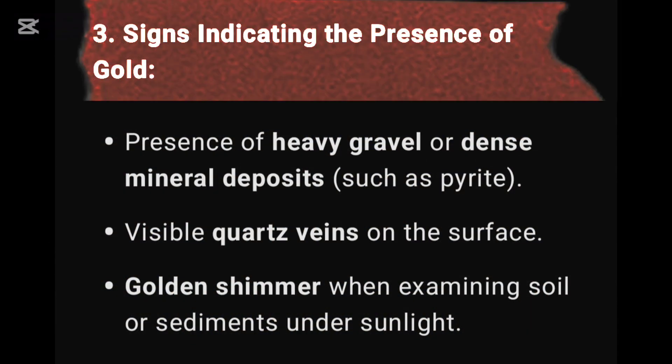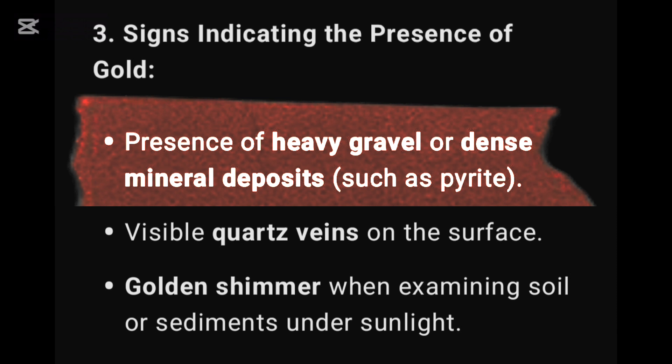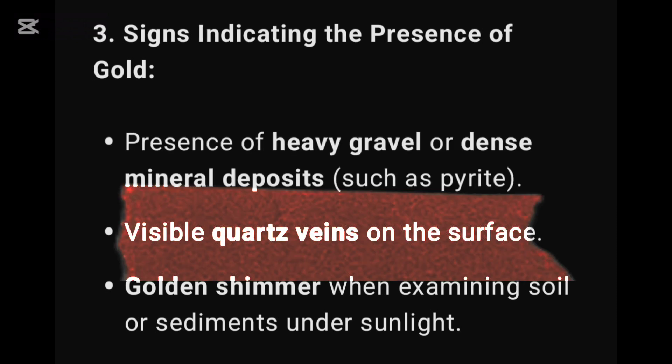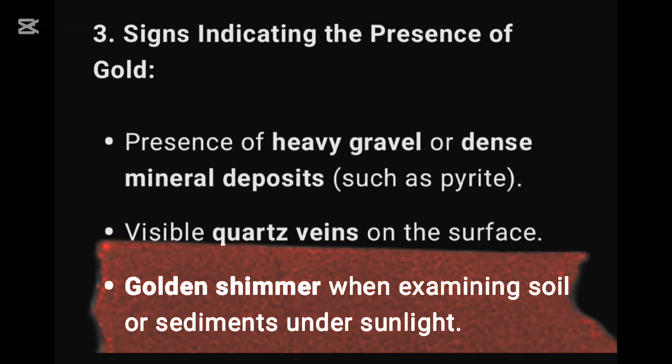Signs indicating the presence of gold: presence of heavy gravel or dense mineral deposits such as pyrite; visible quartz veins on the surface; and a golden shimmer when examining soil or sediments under sunlight.